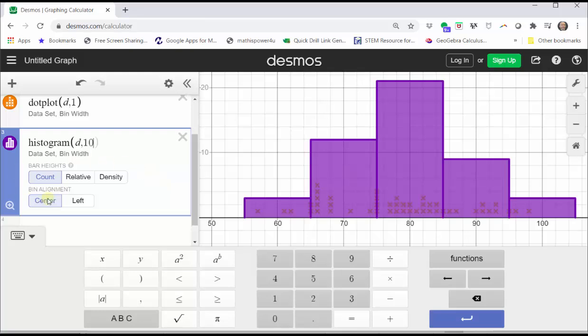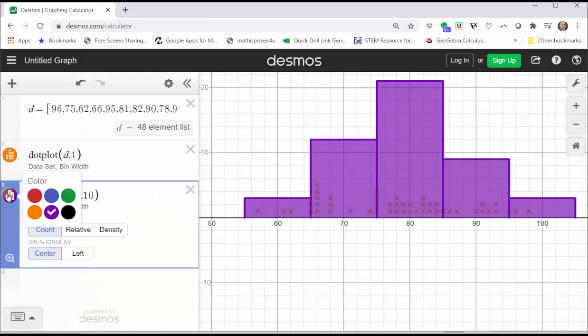We have some options here at the bottom, but before we go over that, let's click and hold on the purple circle on the left, and change the color to red.